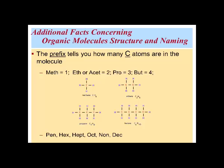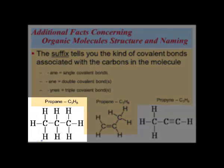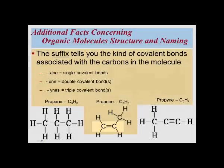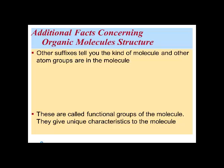The suffix tells us the kind of covalent bonds associated with the carbon skeleton. The ANE ending, as in propane, means there are only single covalent bonds. The ENE ending tells us there's a double bond. And the YNES ending tells us there's a triple bond within the carbon skeleton. Other suffixes tell us the kind of molecules attached to the carbon skeletons — these groups are called functional groups, and they make the carbon skeleton hydrophilic by adding components containing either oxygen or nitrogen.